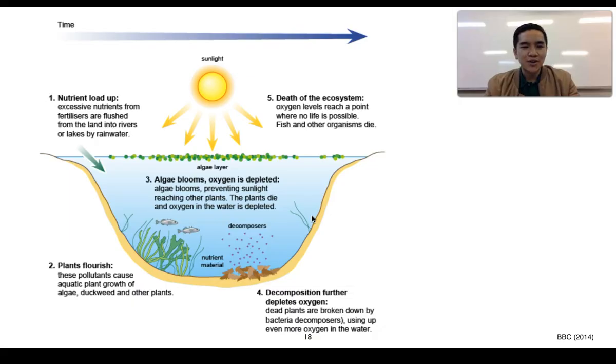Now how does this actually occur? This diagram is going to explain how this leaching and runoff contribute to eutrophication. To start off at number one, we can see there's going to be a load up of nutrients. We get excessive nutrients from fertilizers being flushed from the land into rivers or lakes by rainwater. This provides a large amount of nitrogen and phosphorus and other important nutrients which are necessary for plant and algal growth.